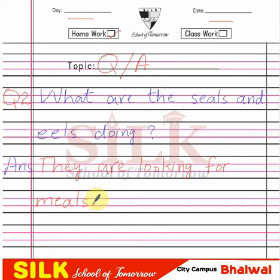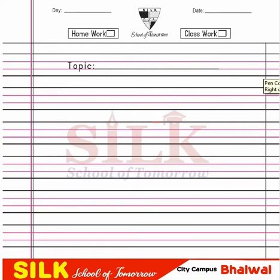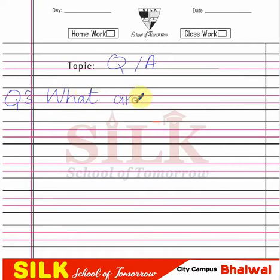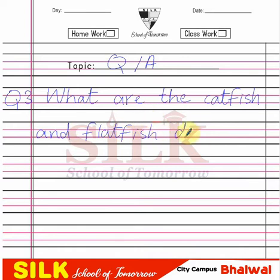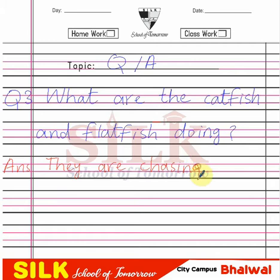They are looking for meals. Now question number 3: what are the catfish and flatfish doing? The answer is: they are chasing — c-h-a-s-i-n-g — they are chasing the fatfish. Flatfish: f-l-a-t-f-i-s-h. The catfish is looking back.